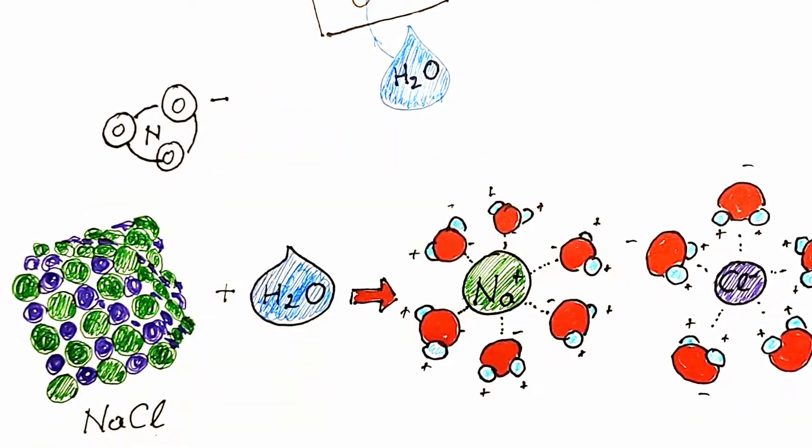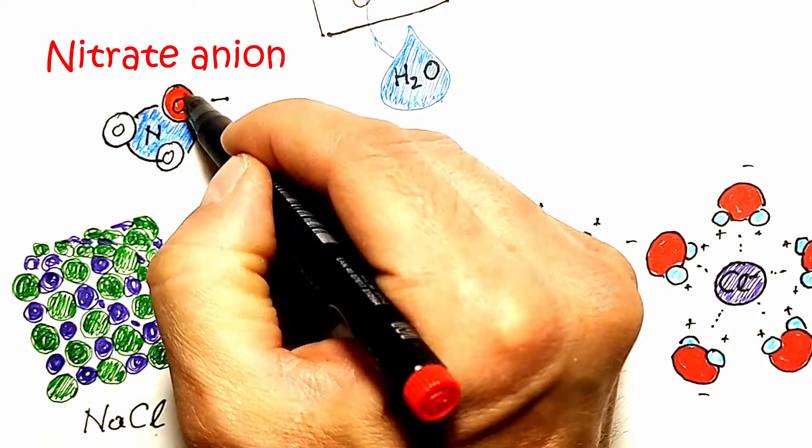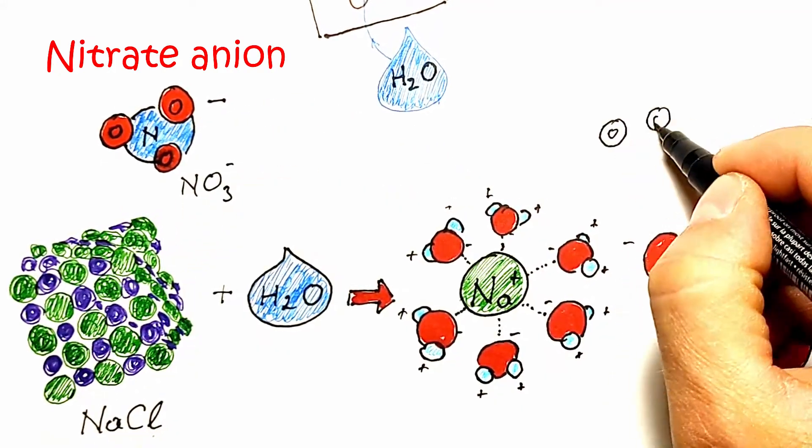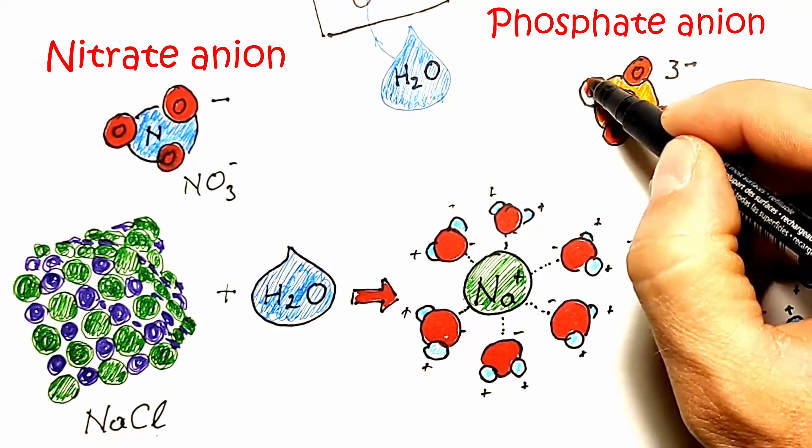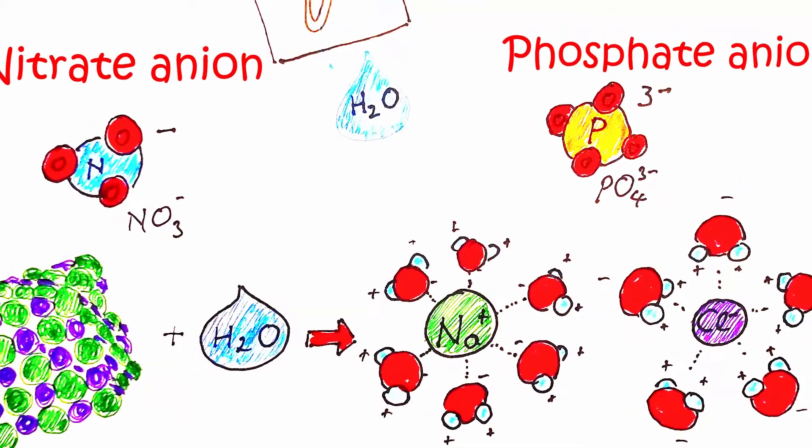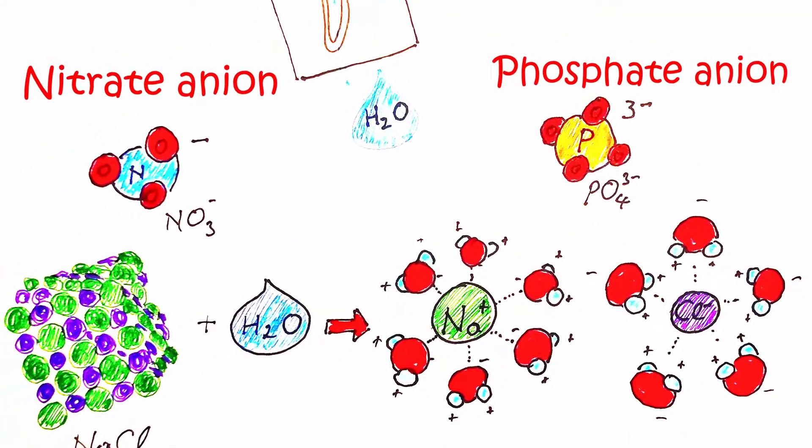Soil minerals are in ionic form, so nitrogen is in the form of nitrate anions, phosphorus in the form of phosphate, but there are also cations of potassium, sodium and other minerals.